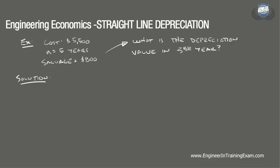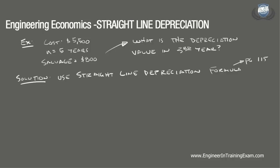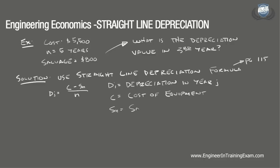So let's run through the solution. The goal is to determine what the depreciation charge will be in the third year for this specific asset. Remember, depreciation is the systematic allocation of the capital cost over its useful lifespan. To determine the depreciation charge for any year within the useful lifespan, we can refer to the formula found on page 115 of the NCEES Supplied Reference Handbook, which states that the depreciation charge in any year is D sub J equals C minus S sub N divided by N. Where D sub J is the depreciation in year J, C is the cost of the piece of equipment, and S sub N is the salvage value in year N.